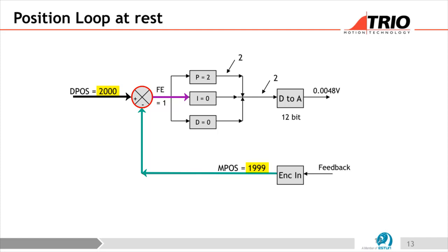That one-count following error goes into the PID section. With a P gain of 2 — which is literally just a multiplier — it multiplies the following error by two, giving a value of 2 on the 12-bit DAC converter, producing about 0.004 volts, which is usually enough to push the motor into position. However, it won't work if there's a load on the motor — for example, a winch lifting mass will have gravity pulling it down, causing an offset.